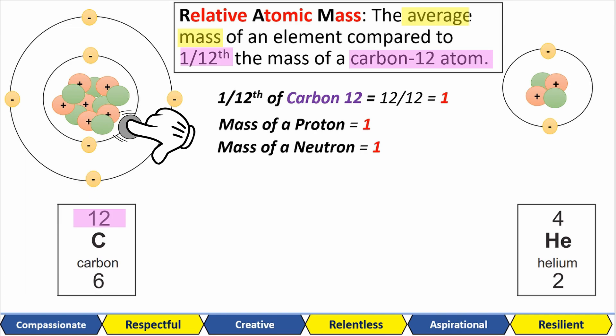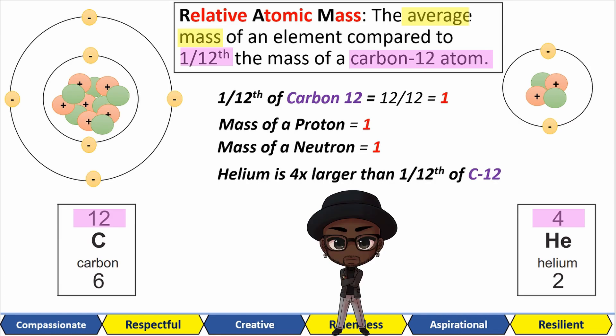Now this is the key thing to understand. A helium atom is roughly 4 times larger than one twelfth of a carbon-12 atom. That means that we have four particles in the nucleus. Two protons and two neutrons. This is what we mean when we say that the mass of an element is relative. We are comparing it to the mass of one twelfth of carbon-12. It's relative to the mass of carbon-12.